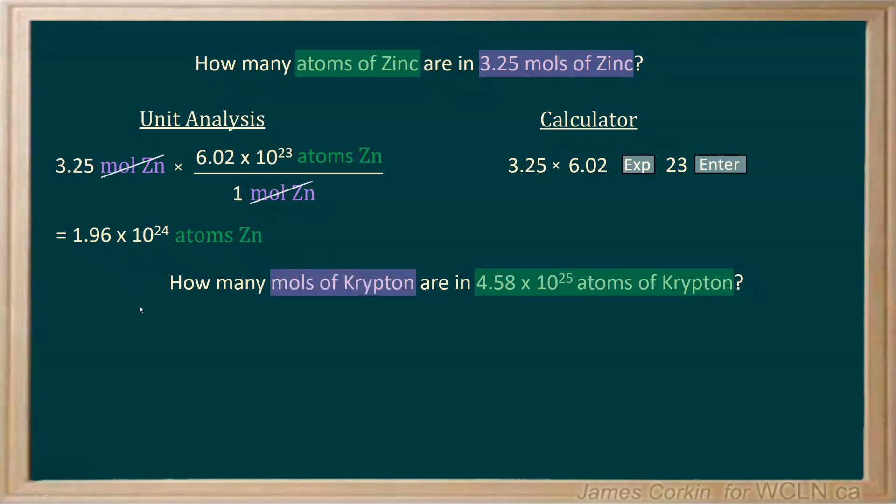In our unit analysis, we'll start with our simplest number. In this case, the only number. We're going to set up our conversion fraction, making sure that our units cancel correctly. You'll notice that I add the units first because I consider those the most important. And then I put in the numbers that go with it.